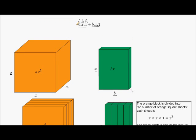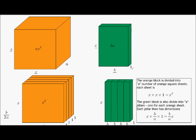Let's forget about the algebra for a moment and just look at a square block where the face is a square and its width is a, whatever a is. Then we have another block where the height is x, the width is b, and its thickness is just one. So if it's just one, I'm going to call it a sheet. The first thing I'm going to do is divide my square block into sheets.